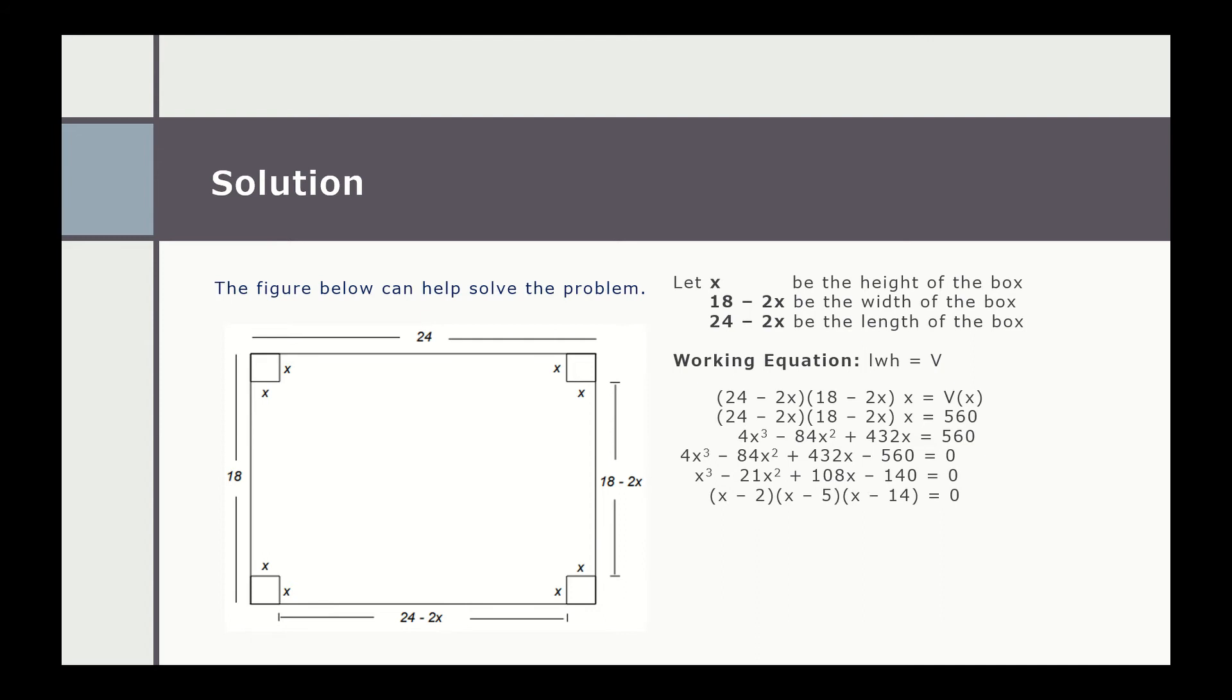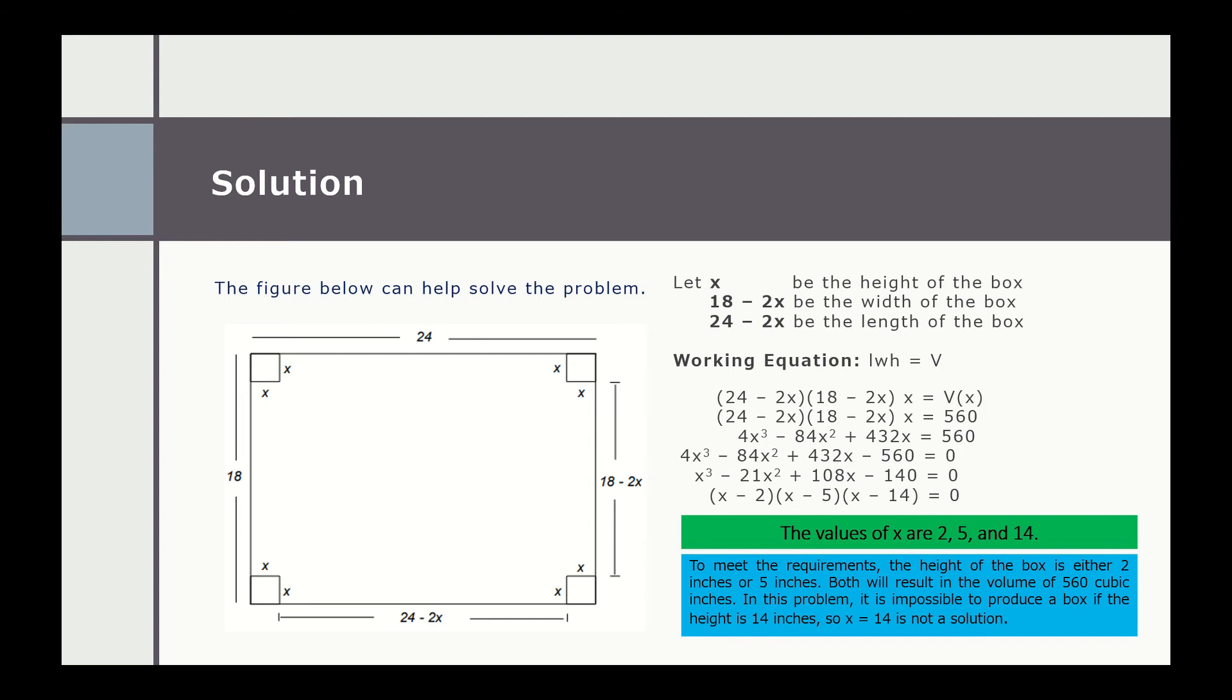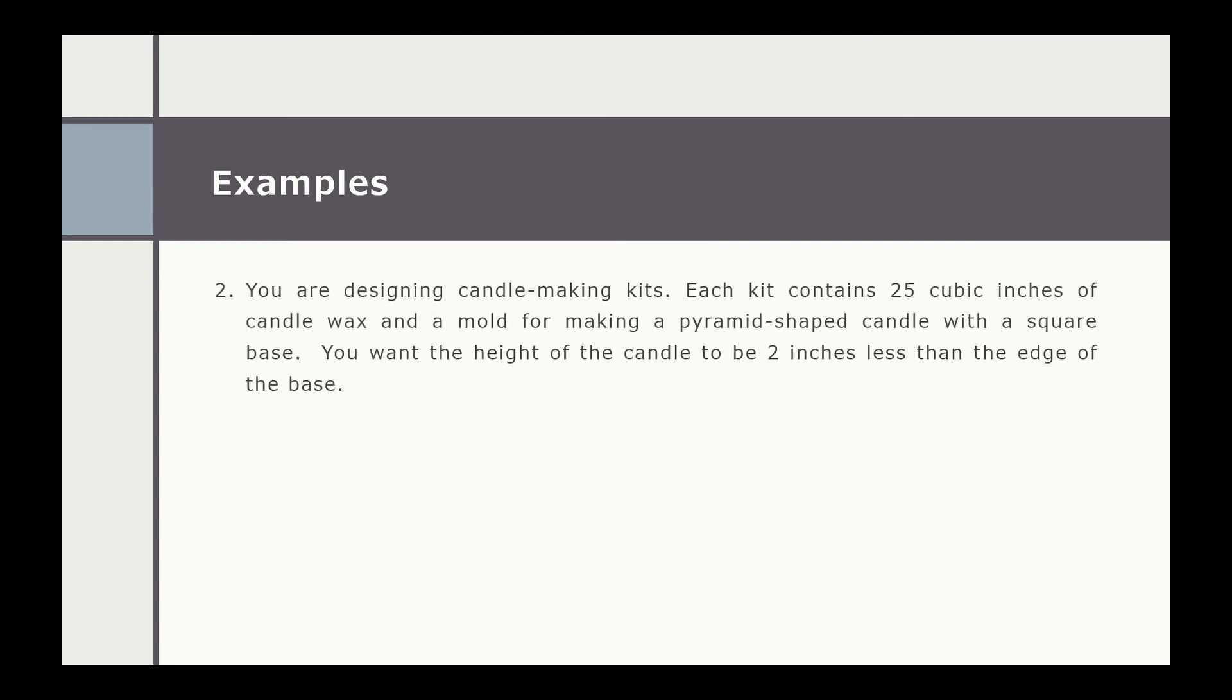The factored form of x³ minus 21x² plus 108x minus 140 is (x minus 2) multiplied by (x minus 5) multiplied by (x minus 14). The values of x are 2, 5, and 14. But to make the requirements, the height of the box is either 2 inches or 5 inches; both will result in the volume of 560 cubic inches. In this problem, it is impossible to produce a box if the height is 14 inches, so x equals 14 is not a solution because the original material is only 24 inches by 18 inches.